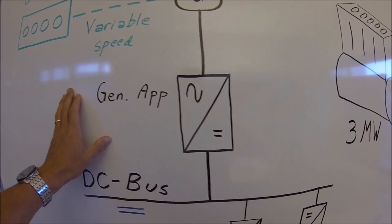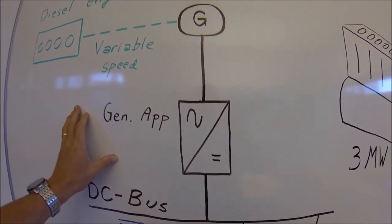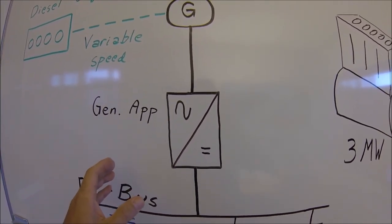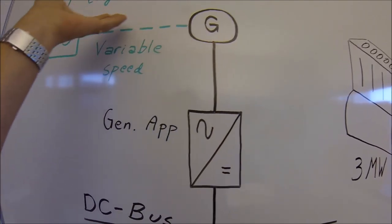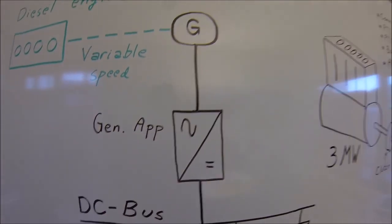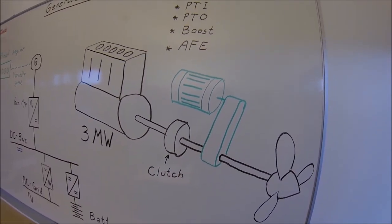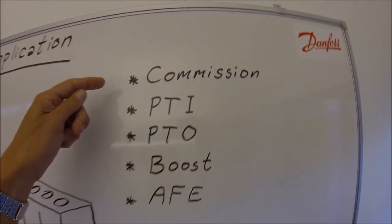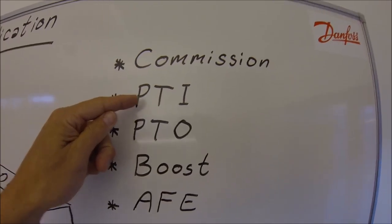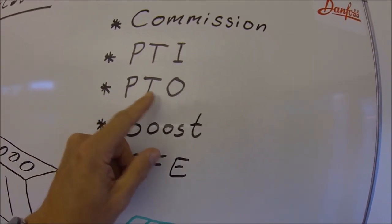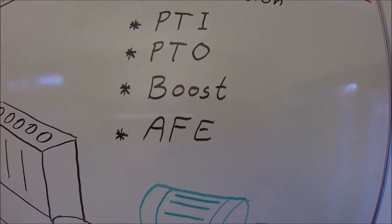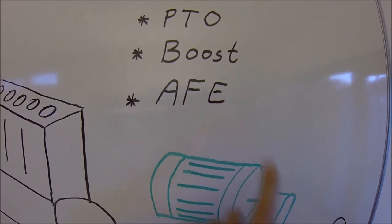The generator application can be utilized in different modes depending on which direction the energy is supposed to flow. Typically for a shaft generator, you can run it in commissioning mode, power take-in mode, power take-out mode, boost mode, and also active frontend mode.